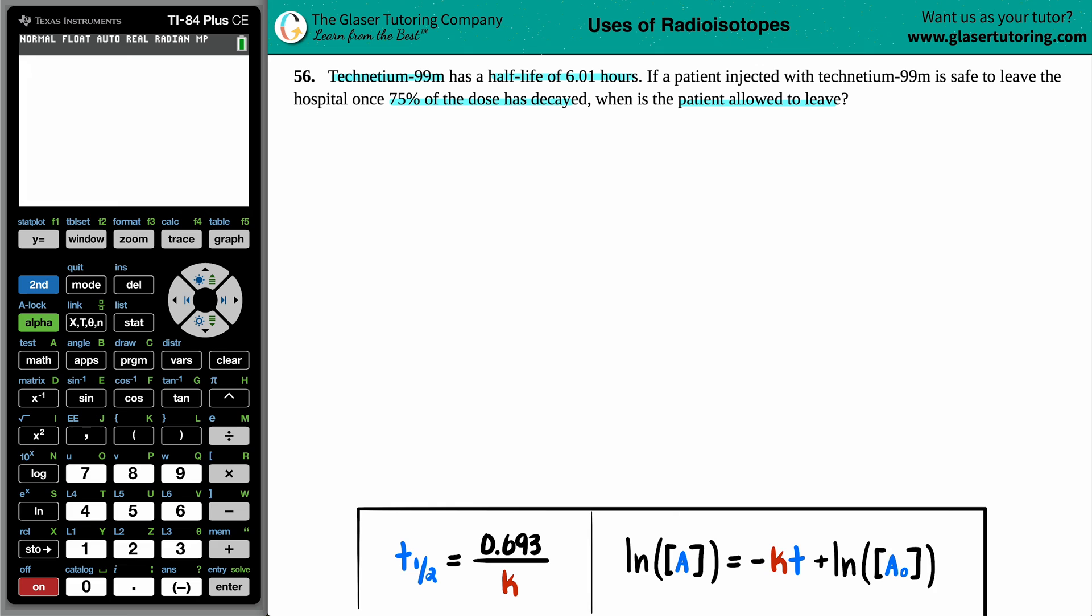Originally when the patient was injected with technetium-99M, initially there was the whole sample. And the whole entire sample, if we're talking about percents, can you tell me what's the total percentage initially? Yeah, you had a hundred percent of technetium, so I'll say TC-99M. Now, at the end of the day, we are allowed, or this patient's allowed to leave once 75% of the dose has decayed. So we'll keep that in mind.